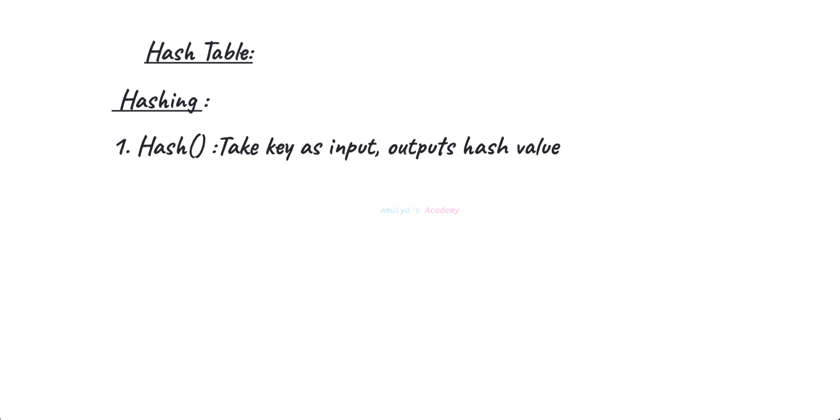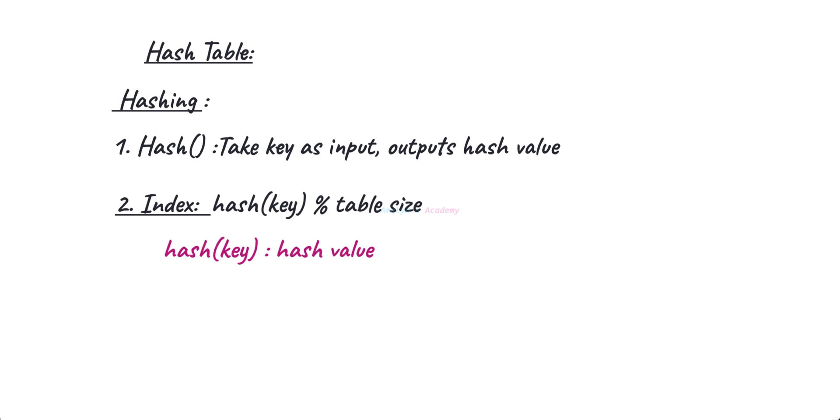To summarize: a hash table is a data structure that stores data in key-value pairs, and the core idea is hashing. Using the hash function we get a number, and using that number we find the index, which tells us where to store the key-value pair in the table. The core structure of a hash table is an array called a bucket array, where each index is called a bucket. To get that index we use the formula: number modulus table size. Table size refers to the number of buckets or slots available for storing key-value pairs.